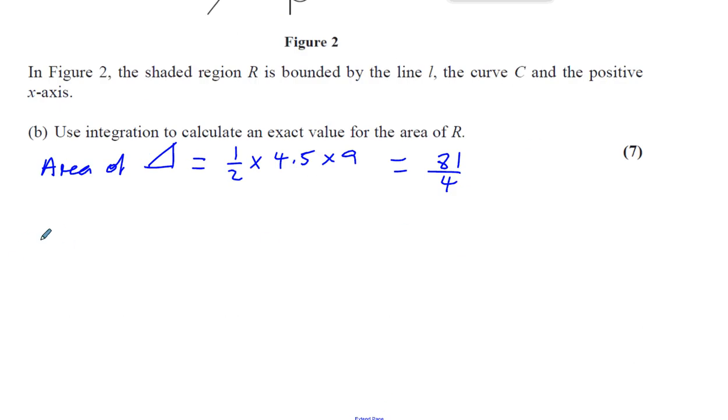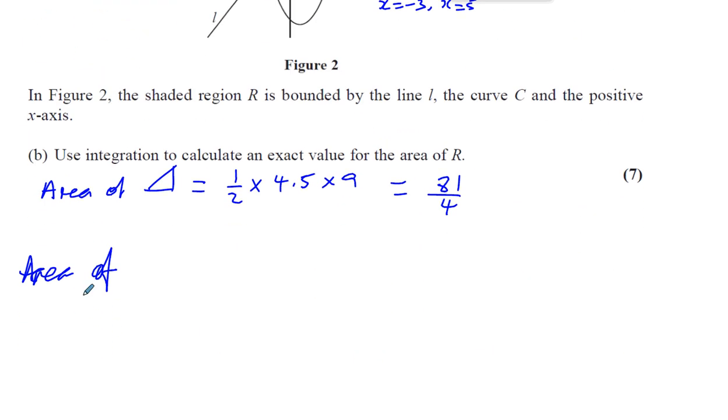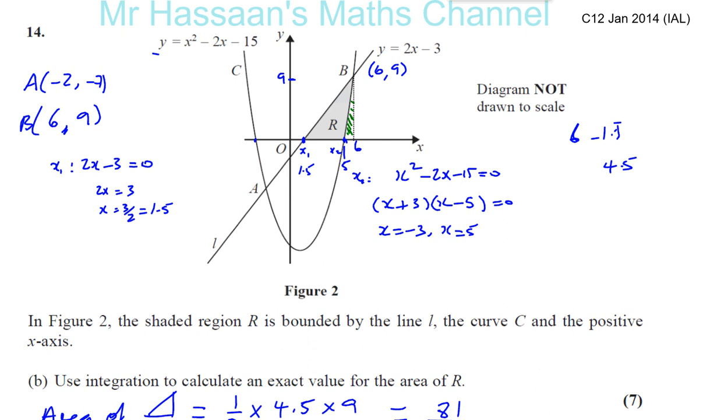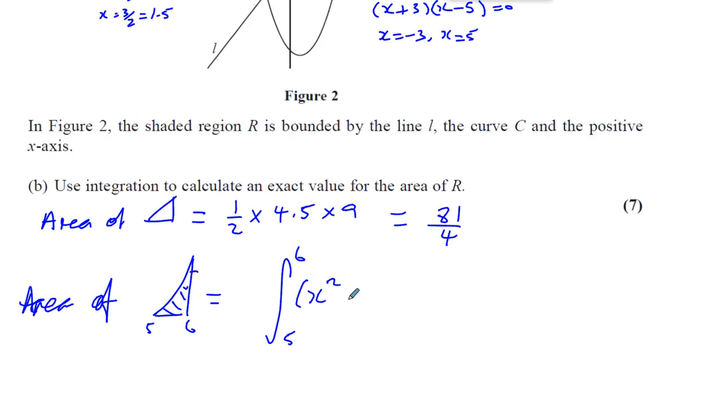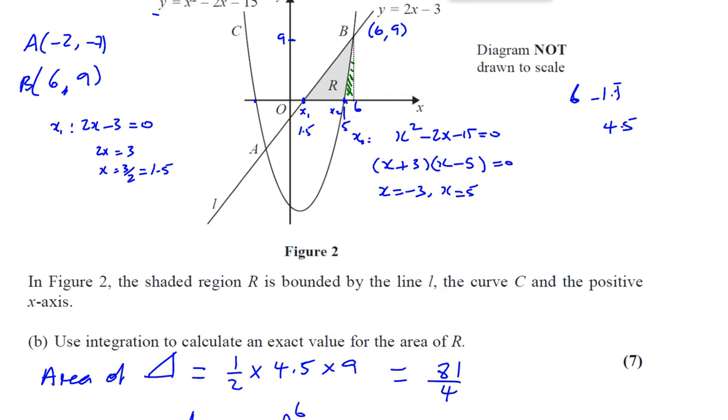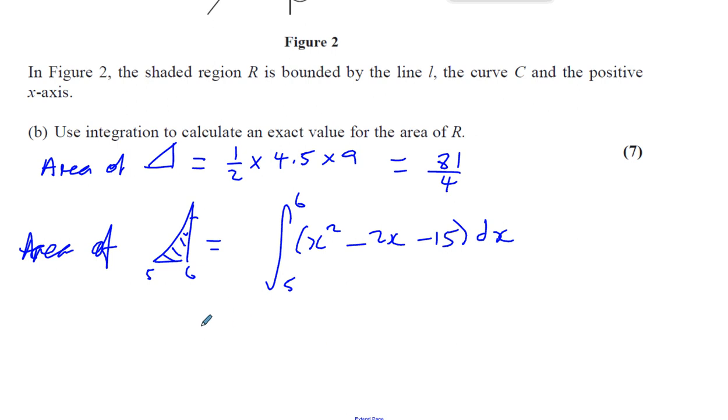Then we want to find the area of the curve between 5 and 6. So we've got the curve. I'm going to find this area here. This is 5 and this is 6. So that's going to be the integral between 5 and 6 of the equation of the curve, x² - 2x - 15, with respect to x. That will give me the area under the curve, which if I take away from the area of the triangle, I will have found my required area.